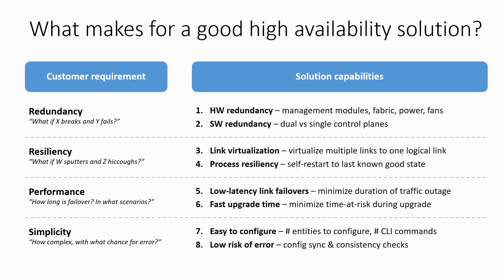Before we dive into virtual switching extension, let's look at what makes a good high availability solution by examining customer requirements. For redundancy, a good solution must provide hardware redundancy — preferably hot-swap — but also software redundancy by having a multiple control plane solution as opposed to a single control plane. For resiliency, customers are looking for link virtualization and process resiliency, meaning that when a process breaks, the system should be self-healing and not impact other processes.